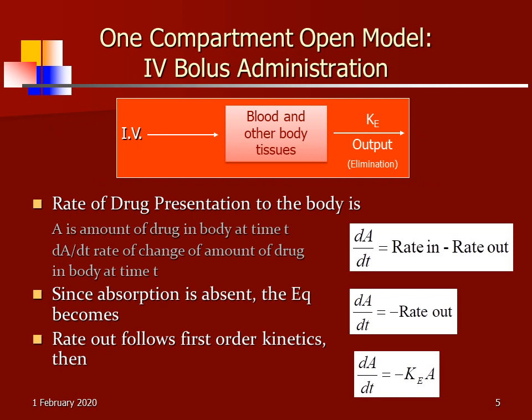Let us move towards the one compartment open model intravenous bolus administration. When the drug is given by the intravenous route, at once the drug reaches into the systemic circulation. The body is going to act as a single compartment, and from that same compartment the drug is going to be eliminated. The rate of elimination is given by Ke.